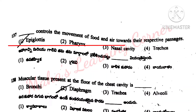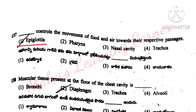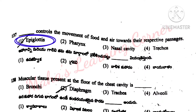Dash controls the movement of food and air towards their respective passages. Options: epiglottis, pharynx, nasal cavity, trachea. Correct answer is option 1: epiglottis.